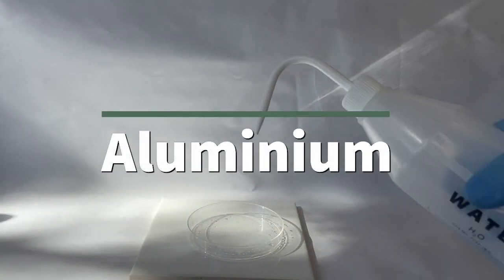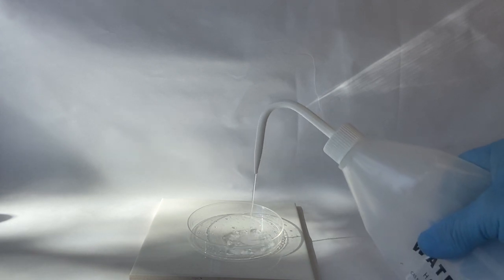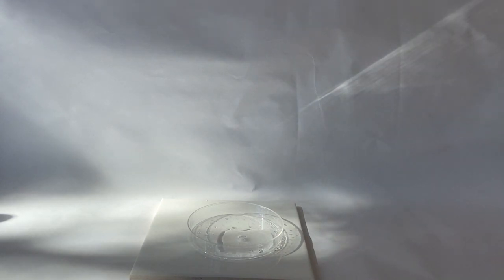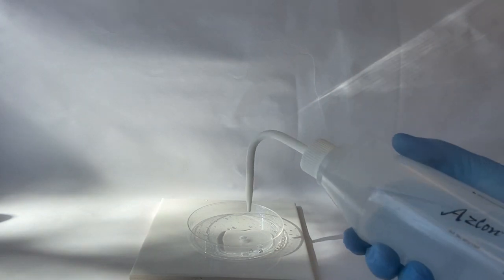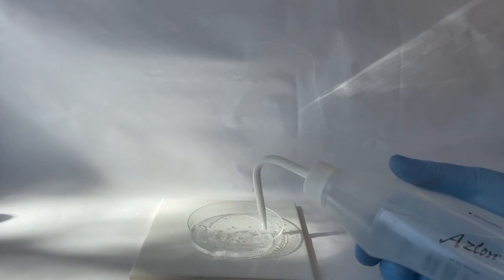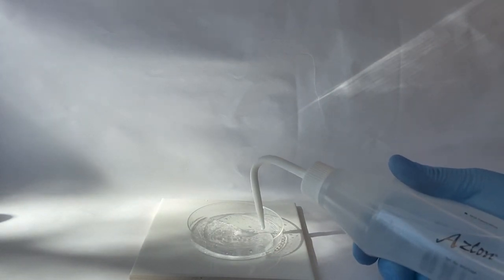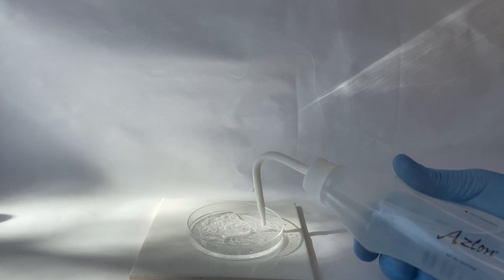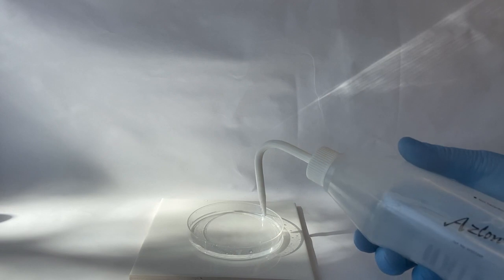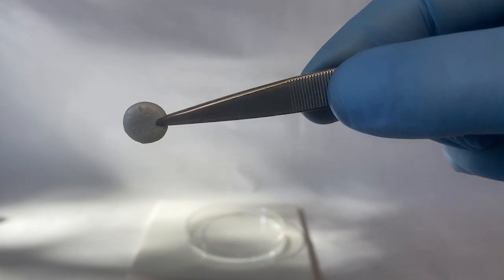Up next is aluminum. We're going to use a similar setup to our magnesium test. Fill this petri dish with some distilled water. We'll take a look at our aluminum metal before we add it to the water.